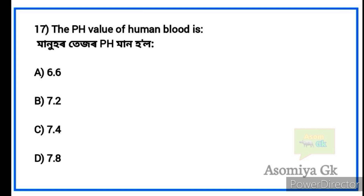Next question: What is the pH value of human blood? Option C: 7.4. The pH value of human blood is 7.4.